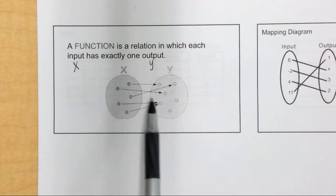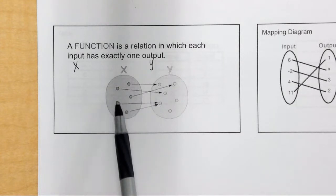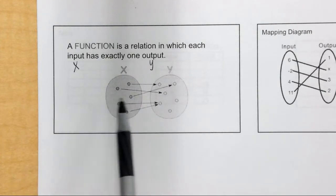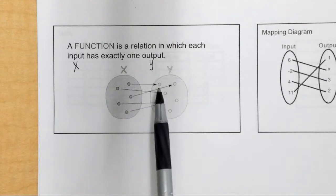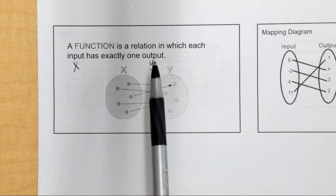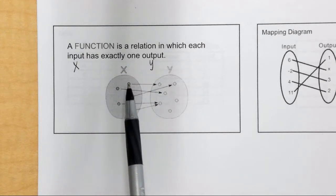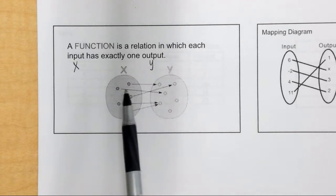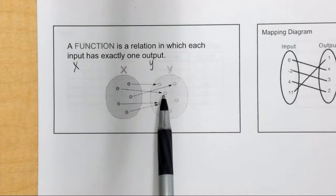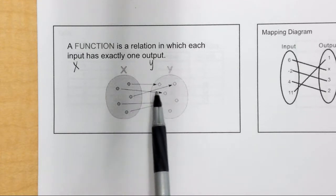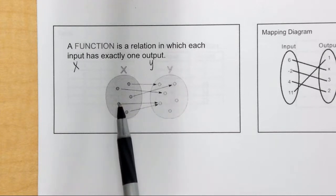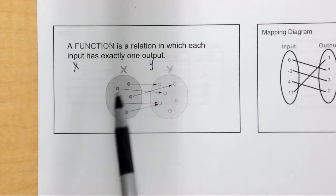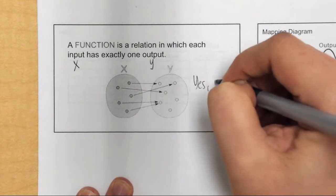This is what is called a mapping diagram, where I have my x's over here and my y's over here, and arrows connecting the two. If this is going to be a function, each x value has to go to exactly one y value. Looking at this diagram, each x goes to exactly one y, and no others. So this is a function. It's okay that two x values go to the same y — what matters is that each x goes to exactly one y.